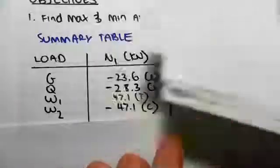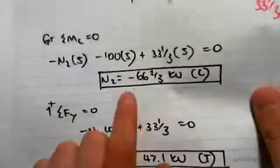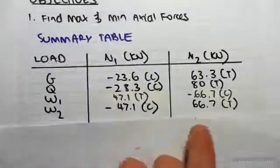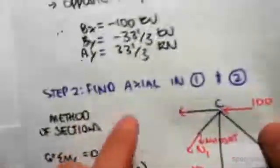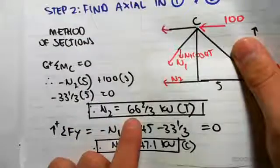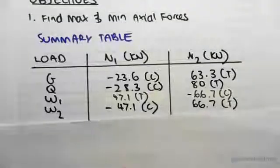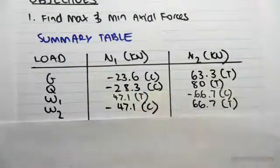We have n1 is 47.1 in tension, n2 is minus 66.7 in compression. And then for wind case 2, n1 is minus 47.1 in compression and n2 is 66.7 in tension. So this table is just going to make our life a lot easier for this step.